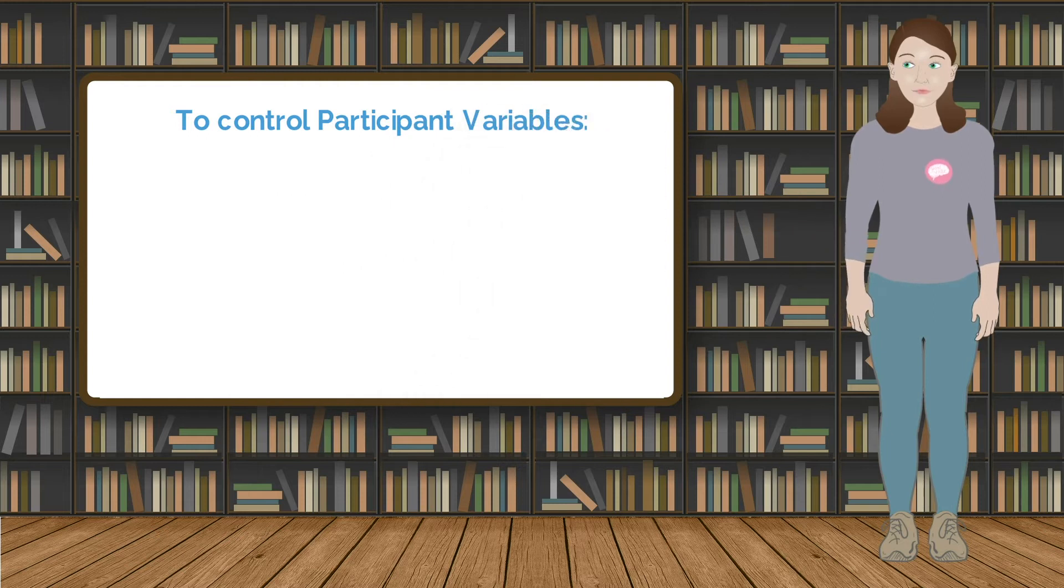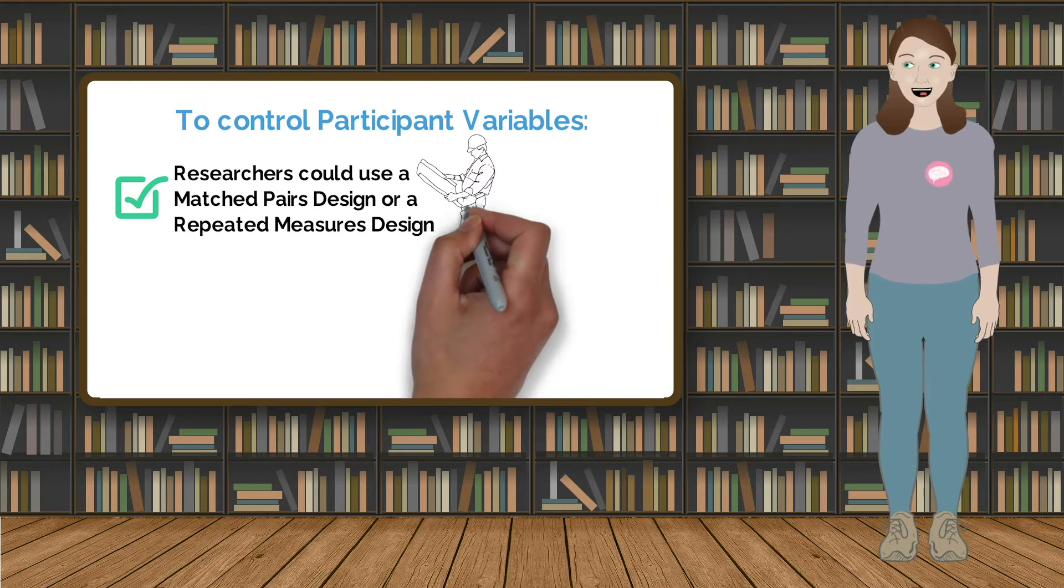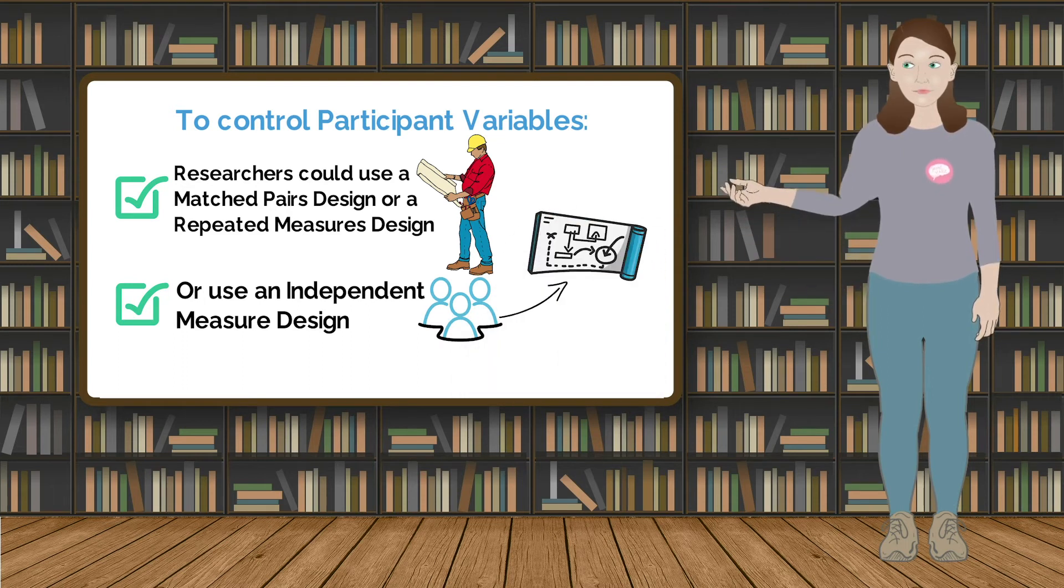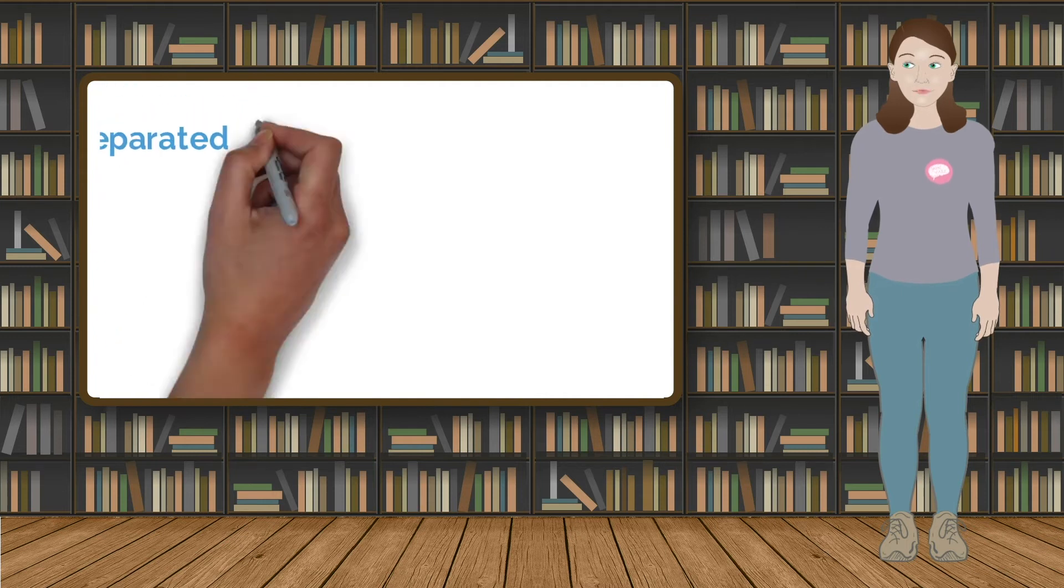To control for these in a study, the researchers could use a matched pairs design or repeated measures design. They could also use an independent measure design, but make sure the participants are randomly allocated to each condition. In this way, any participant variable should be randomly and equally distributed across all the conditions.